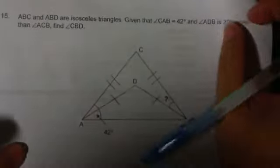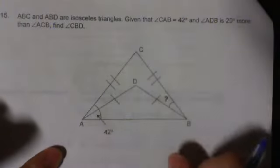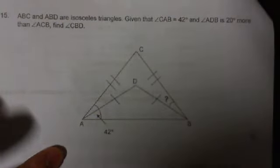Moving on, question 15. ABC is an isosceles triangle. ABD is an isosceles triangle as well. Given that angle CAB is 42 degrees and angle ADB is 20 degrees more than angle ACB, find angle CBD.